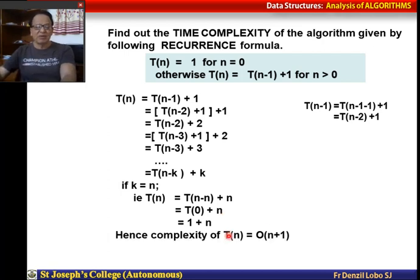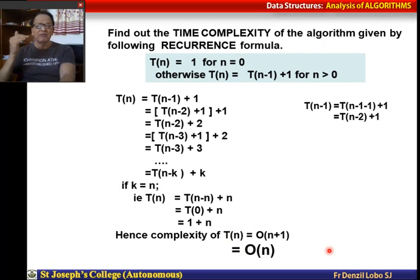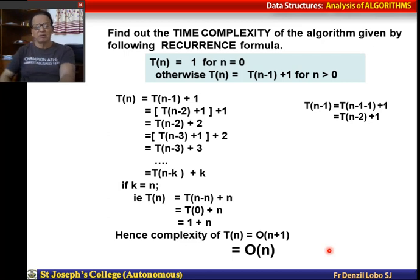Therefore, the time complexity of T(n) = T(n-1) + 1 is of the order of n + 1, simplified to O(n). So this recurrence formula has a complexity of Big O of n.